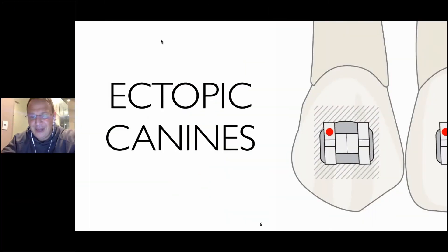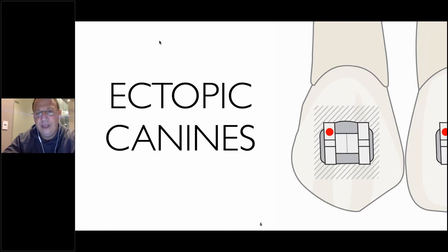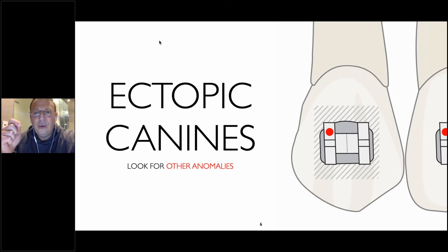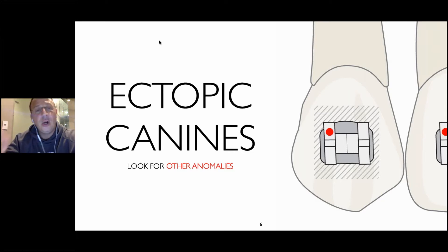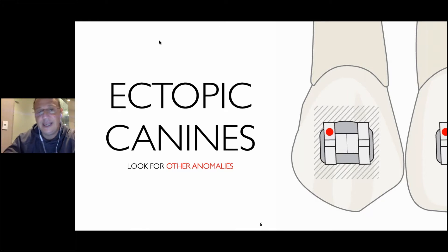Let's go into ectopic canines. Now, I know the subject of this presentation is substitutions, but there is some information regarding ectopic teeth that does overlap and I want to make sure I cover it. This is great for any residents who might be listening tonight because a lot of this stuff will be on your board examination. The key when you have ectopic canines is you immediately want to look for other anomalies. This is particularly true when you have palatally displaced canines. So if you have dental anomalies such as a peg lateral, I want you to immediately begin looking to see if you have missing teeth or palatally displaced canines.